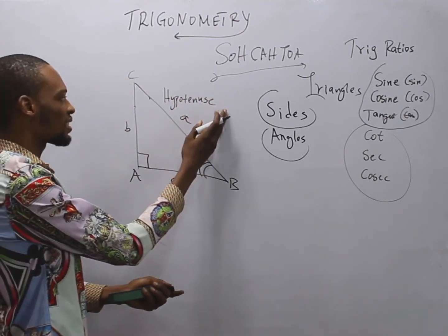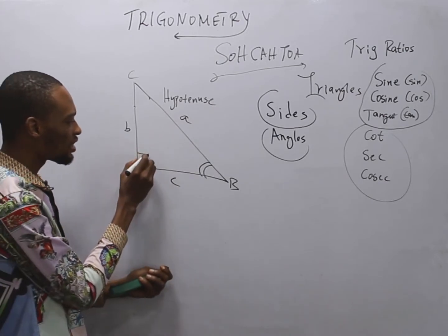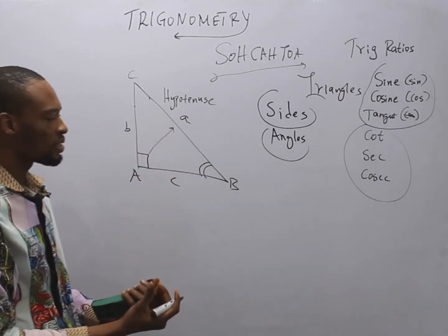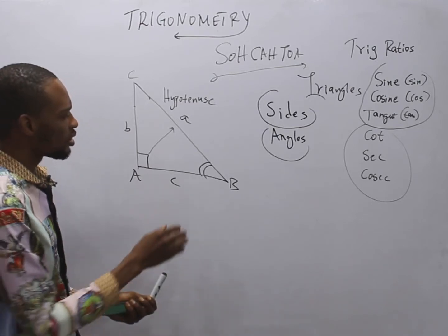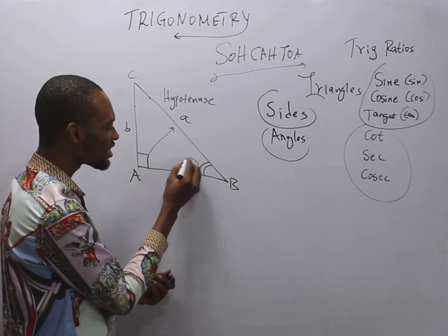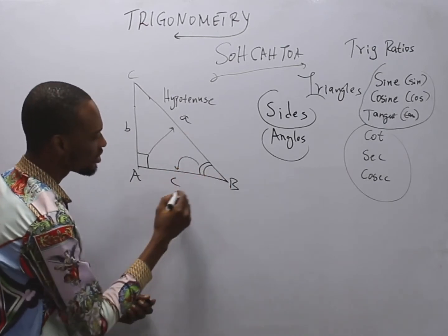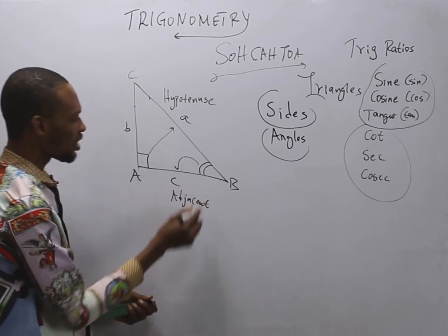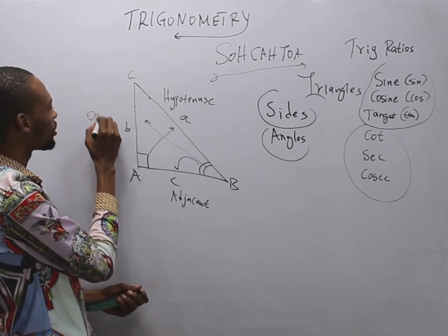This longest part or the one that is directly facing this 90 degree angle is called the hypotenuse. Now, look at this part. This part is this acute angle. Any side it is facing this way is called the adjacent, and here it is referred to as the opposite.